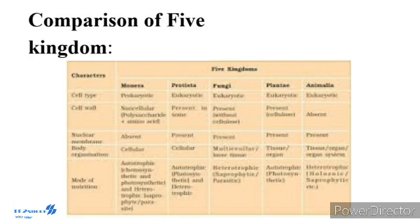Regarding nutrition, Monera can be autotrophic, phototrophic, chemoautotrophic, heterotrophic, parasitic, or saprotrophic. Protista nutrition is autotrophic or photosynthetic or heterotrophic. Fungi nutrition is heterotrophic, either parasitic or saprotrophic. Plantae nutrition is autotrophic only, photosynthetic. Animalia nutrition is heterotrophic, which may be holozoic. Regarding motility, Monera is motile or non-motile; Protista is motile or non-motile; Fungi is non-motile; Plantae is mostly non-motile; Animalia is mostly motile.